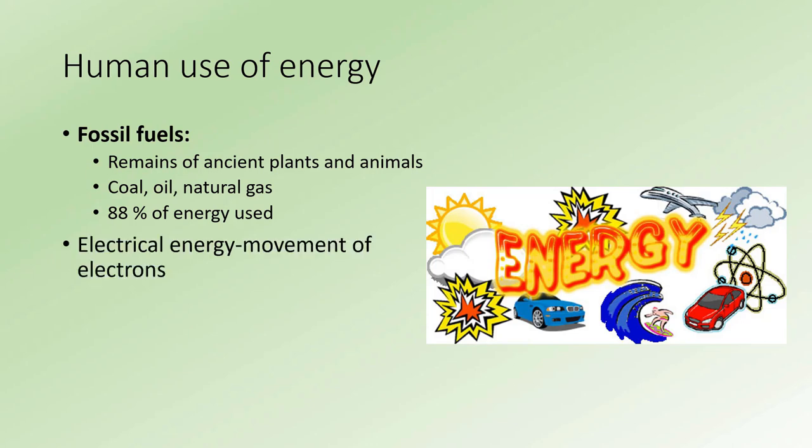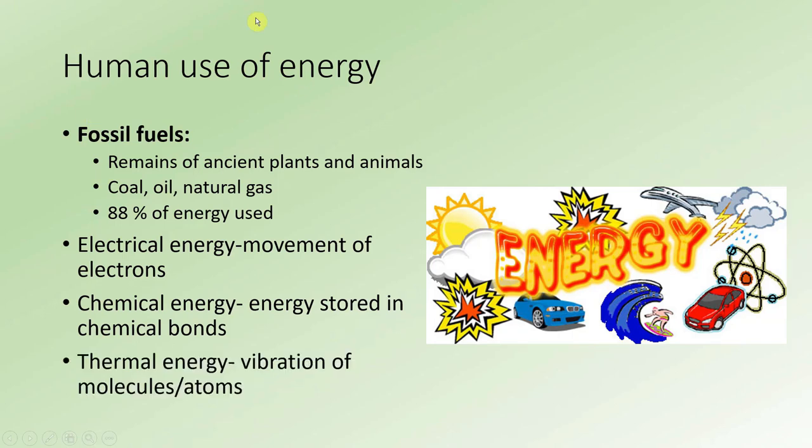There's different types of energy that we can access. Electrical energy is the movement of electrons down a wire. Chemical energy is the energy stored in chemical bonds - this is what we're after in our fossil fuels. Thermal energy is the vibration of molecules and atoms, heat. The faster something vibrates, the warmer it is.